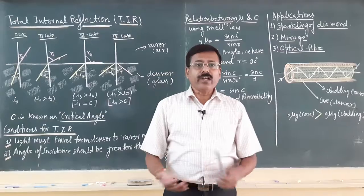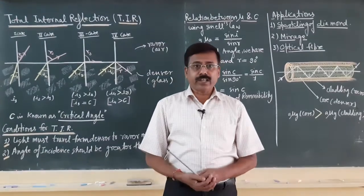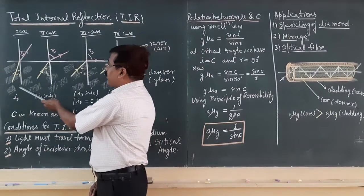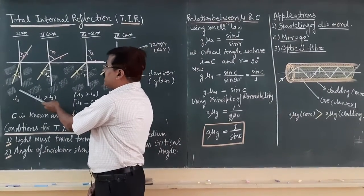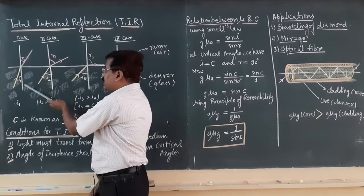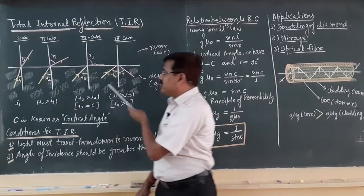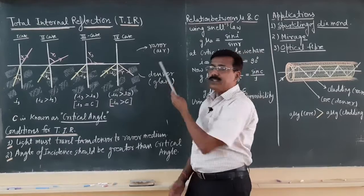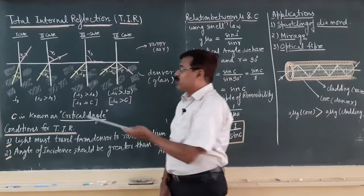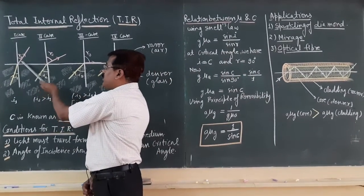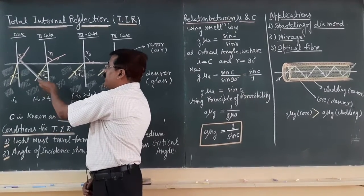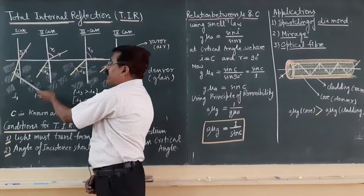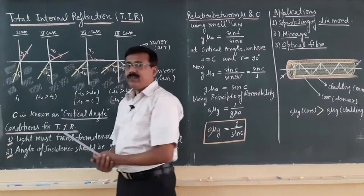First, try to understand the cases. In the first case, when light travels from denser to rarer medium — denser medium means glass and rarer medium means air — the angle of refraction will be greater than the angle of incidence.